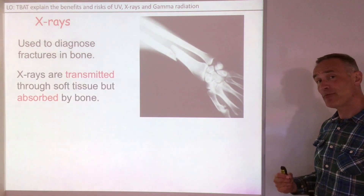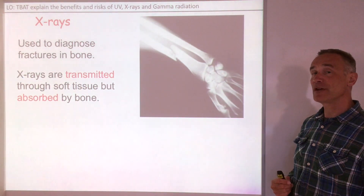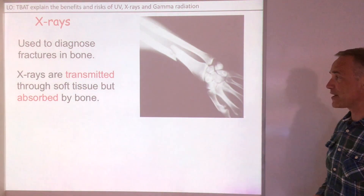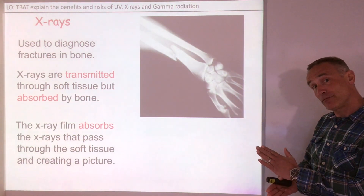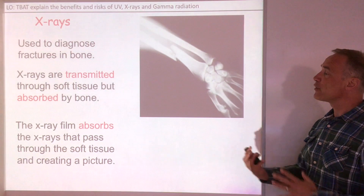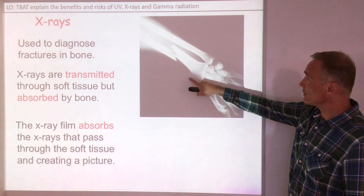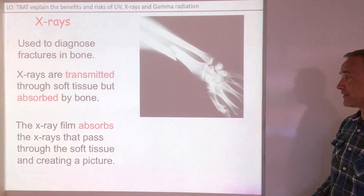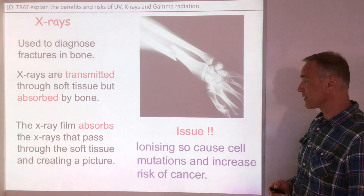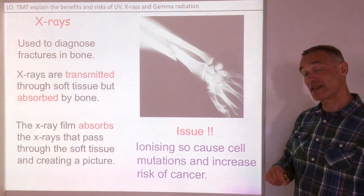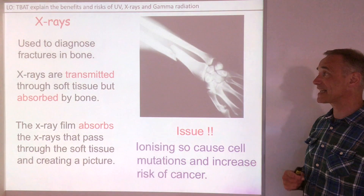So how do x-rays work? The x-rays are transmitted — that means passed through the soft tissue — but get absorbed by the bone. At the back you have a film or a digital detector that will absorb those x-rays, and where they get through the soft tissue they expose the film. But there's an issue: we know that x-rays are ionizing and so they cause mutations which can lead to cancer.